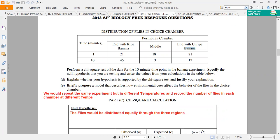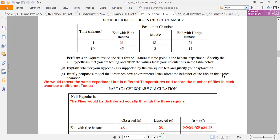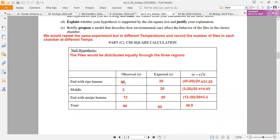Before performing the Chi-square test on the data for the 10-minute time point in the banana experiment, I will specify the null hypothesis that you are testing and enter the values from the calculation in the table below.